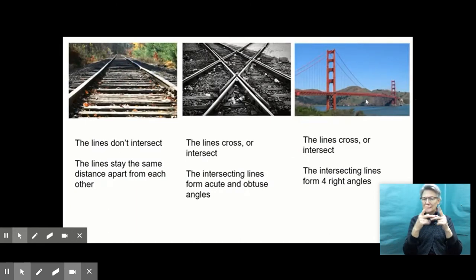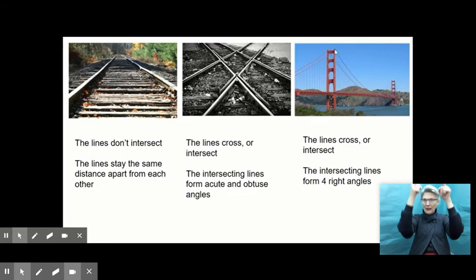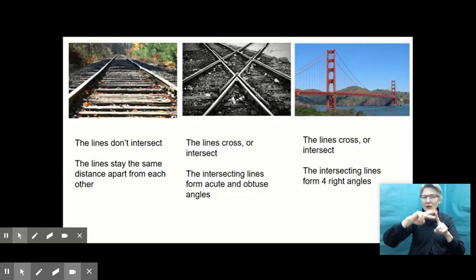And then my last picture, the Golden Gate Bridge, I noticed that the lines - I was looking at the structures of the bridge, like this up and down support here and then the actual bridge across. You notice that the lines crossed or intersected and that those intersecting lines formed four right angles. We're going to talk about some mathematical terms to describe these pictures.